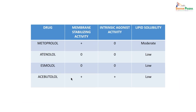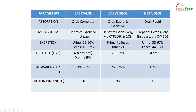Looking at membrane stabilizing activity, intrinsic agonist activity, and lipid solubility: metoprolol has membrane stabilizing activity, which is why it is mostly used in cardiac conditions. Atenolol is also very commonly used, as are esmolol and acebutolol.